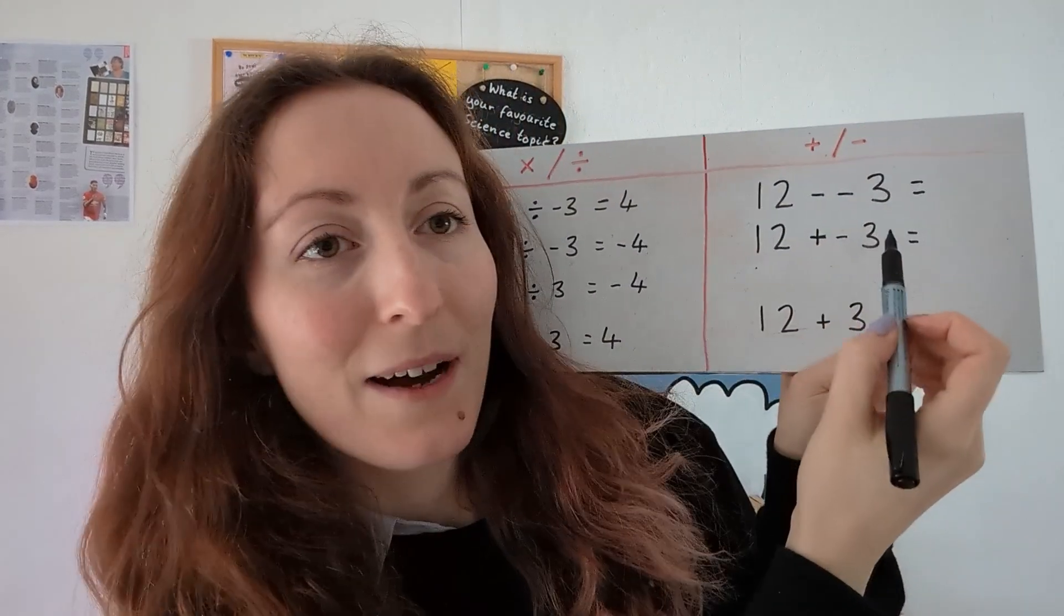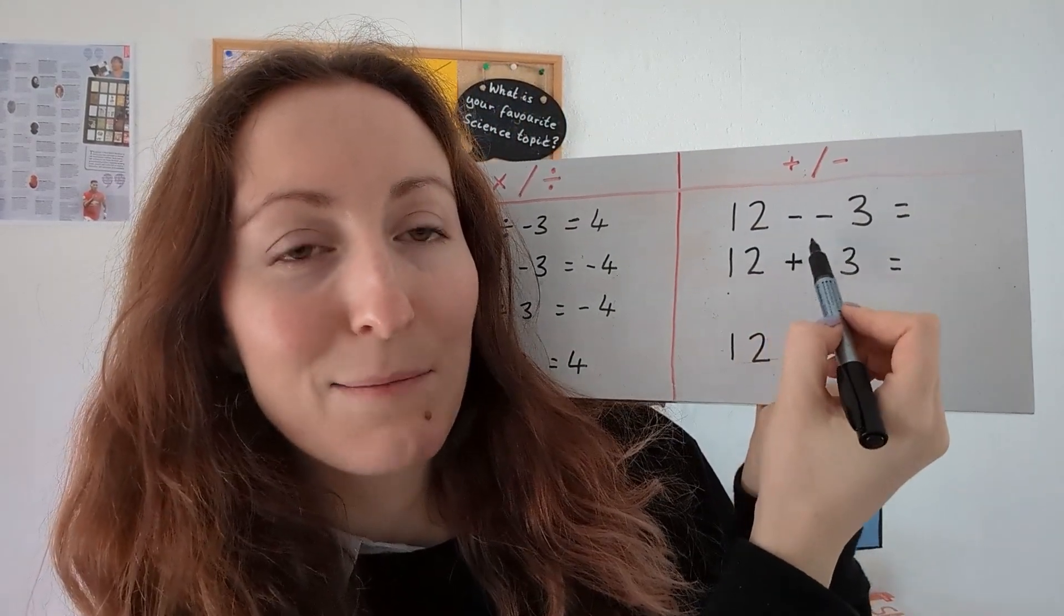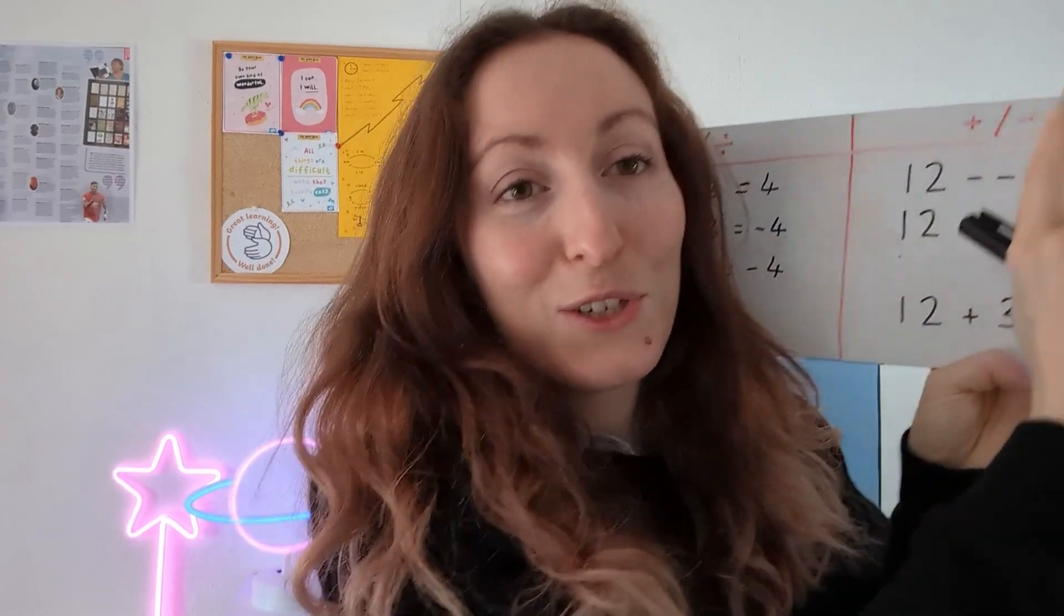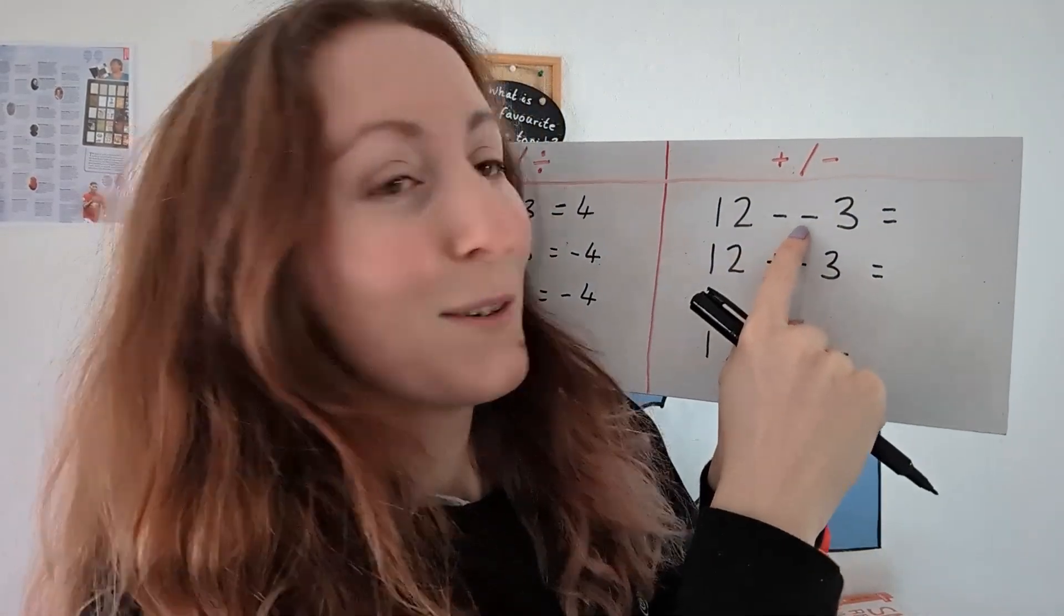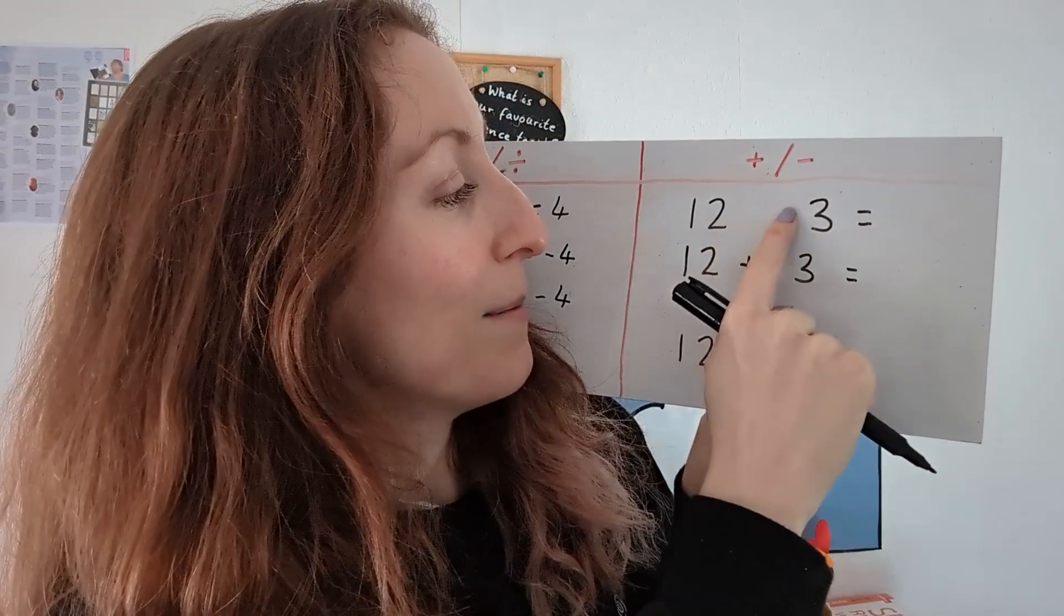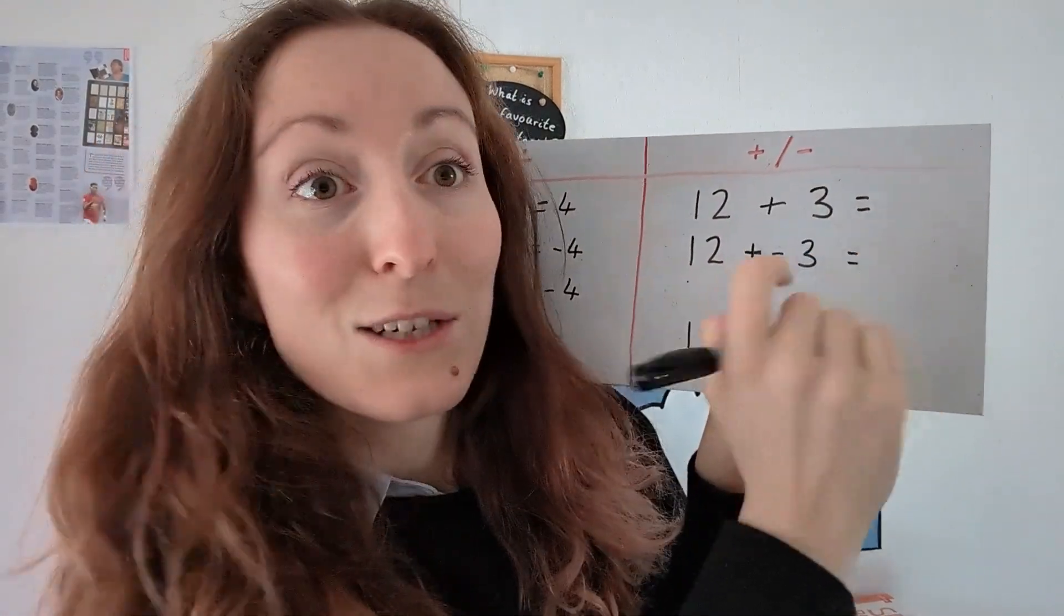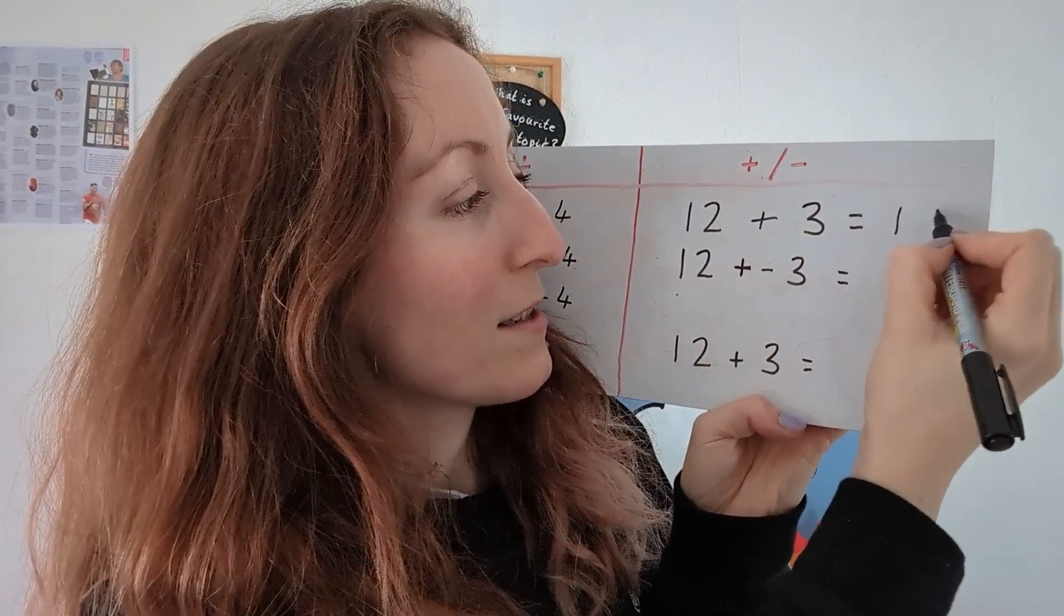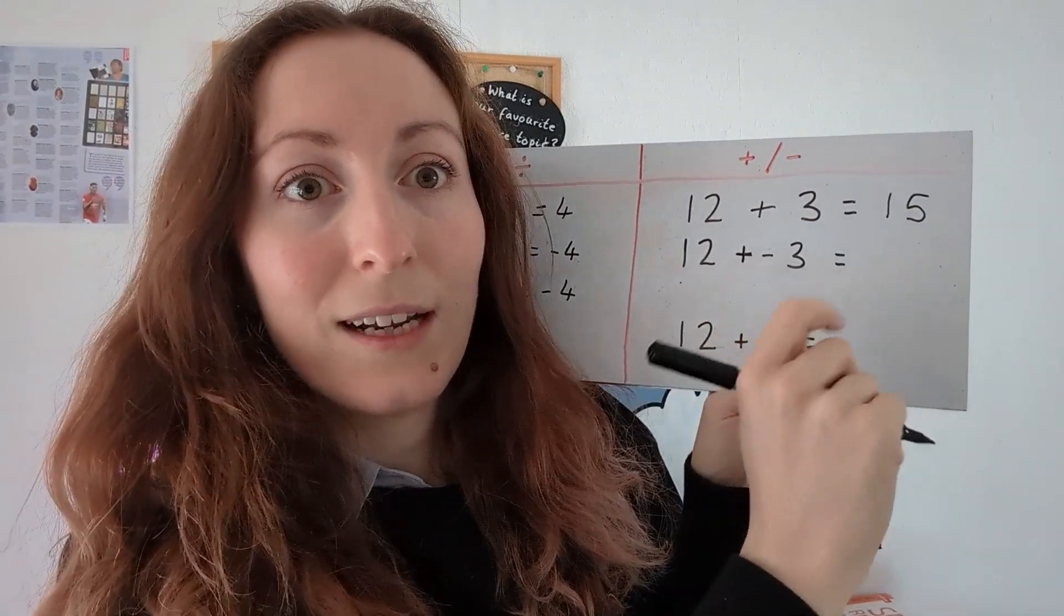Now let's take a look at adding and subtracting. With adding and taking away with negative numbers we want to focus on the signs in the middle of the sum. So we might end up with 12 minus minus three. Two negatives do make a positive except we're changing the signs themselves. So 12 minus minus 3 becomes 12 plus 3. So our answer to 12 minus minus 3 is 15.